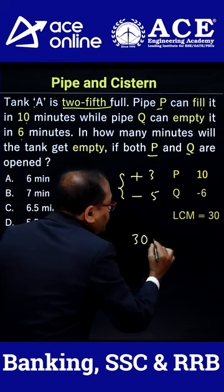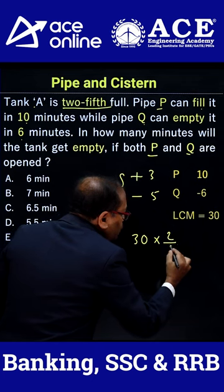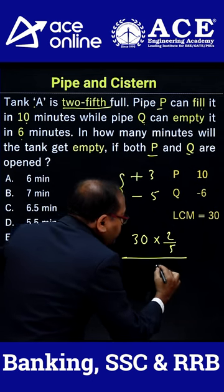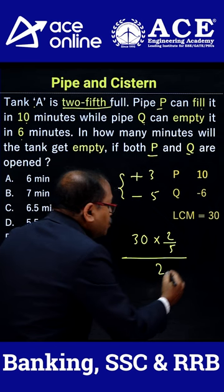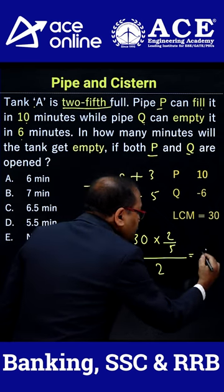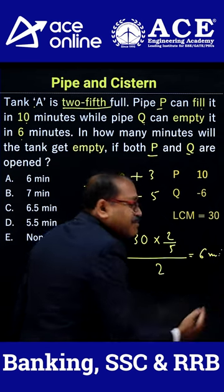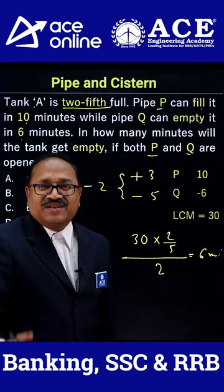The total tank capacity is 30 liters, and 2/5 of it is filled, which equals 12 units. Since 2 units are emptied per minute, the total time taken is 12 divided by 2, which is 6 minutes to empty. That's all — thank you for watching the video.